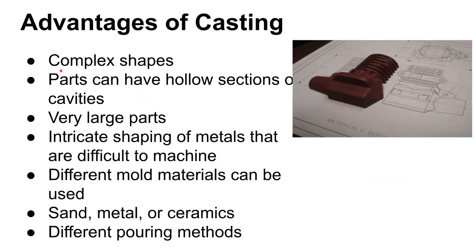Some advantages of casting material as opposed to machining it is that you can get complex shapes basically for free. After you've gone to the trouble to make the mold or the pattern, you can reproduce complex shapes very easily. The complexity matters less when you're casting. If you're machining cooling fins into a solid billet of aluminum for a small engine, you have to remove a lot of metal each time and each fin has a cost associated with it. That kind of goes away with casting.